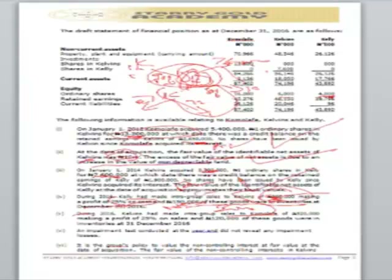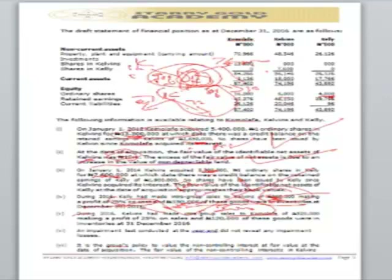Note that since the profit was made by the subsidiary, the unrealized profit will be apportioned between the group and the NCI. Note 5 is similar to Note 4 — it also involves intra-group trading, so the same principle applies. Note 6 states that an impairment test at year end did not reveal any impairment losses, so we move on.